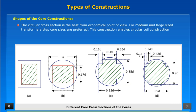The circular cross section is the best from an economical point of view. For medium and large size transformers, step core sizes are preferred. This construction enables circular coil construction.